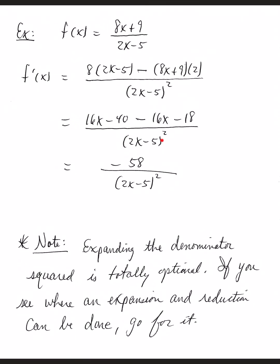Still over the denominator squared. 16x minus 16x is 0. Negative 40 minus 18 is negative 58 over the original denominator squared.